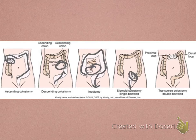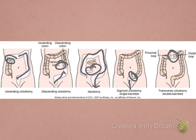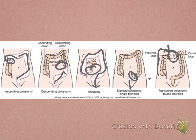A double barrel ostomy is often created for someone who has had part of the colon removed and plans to have it reattached — for example, someone with a cancerous tumor who needs radiation to allow that area to heal, or a Crohn's patient where surgery is a last resort but part is removed temporarily. Stool comes out of one end while the other portion rests until reattachment is planned.